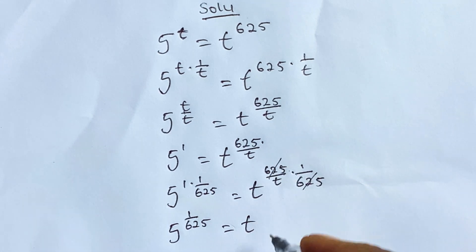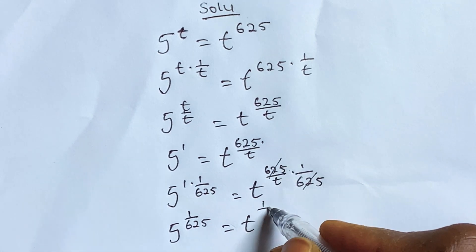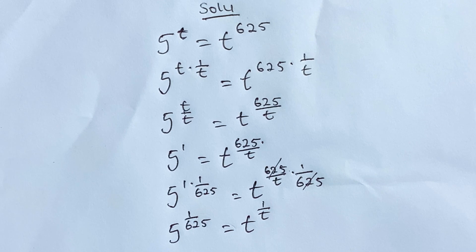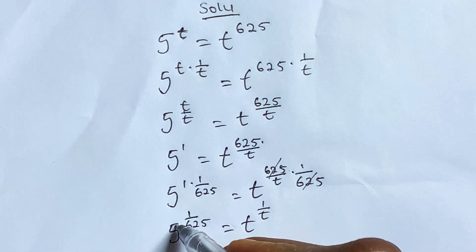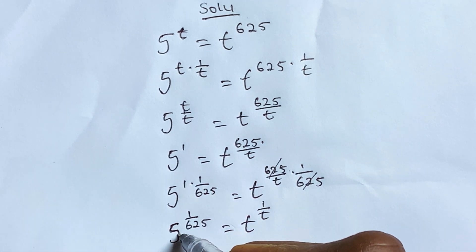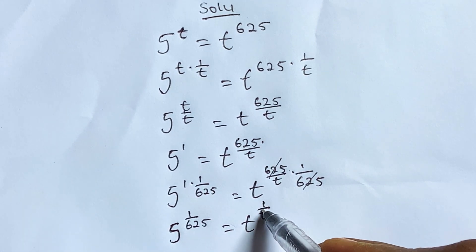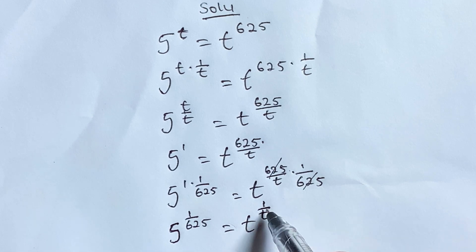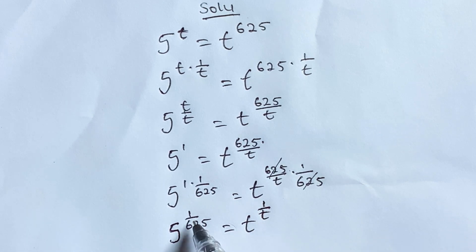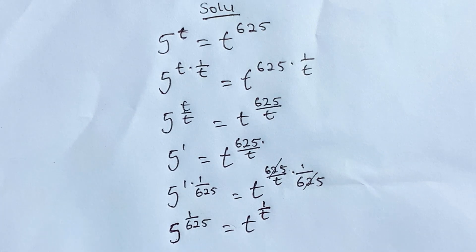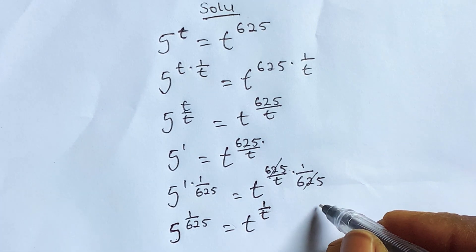Now our target is to have the left side in the same form as the right side, which is 1 over t, where t is the base. We need to rewrite the left side so that the base matches. To do that, we need 1 over a number that would give us the same base.